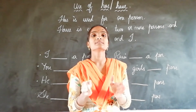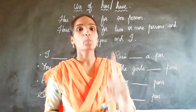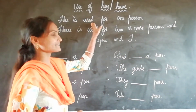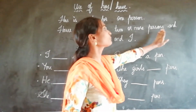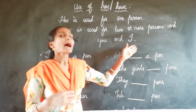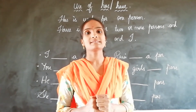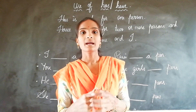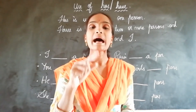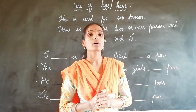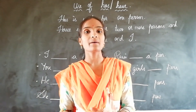Has is used for one person. Remember, has is used for one person, and have is used for two or more persons, and also for 'you' and 'I'. When the sentence is talking about one person, we should use has, and when the sentence is talking about two or more persons, or about you and I, we should use have.